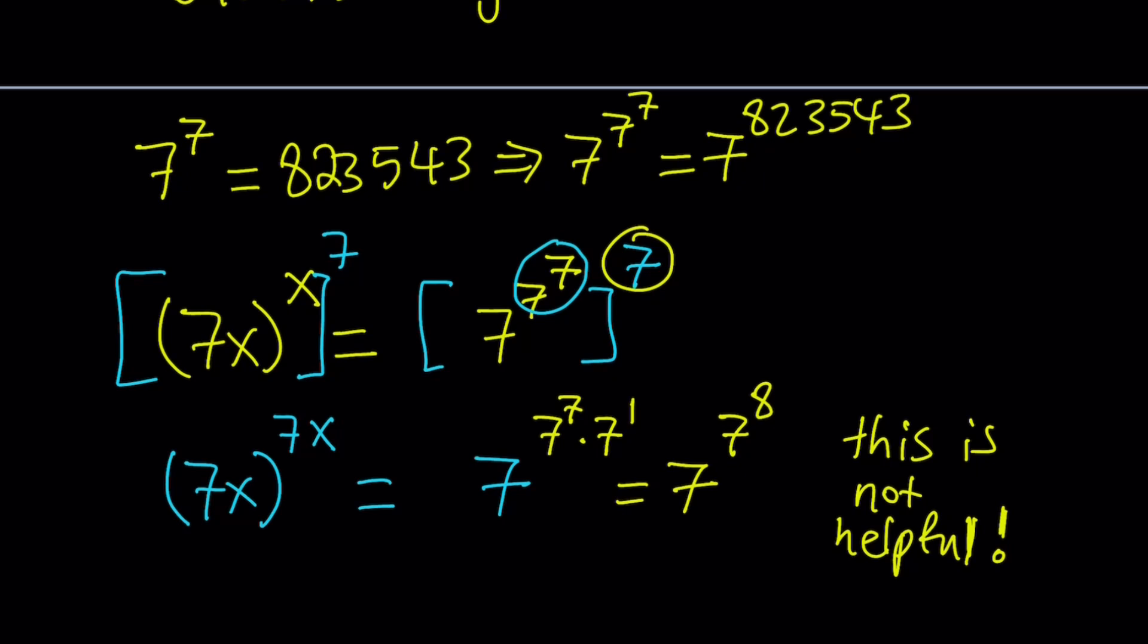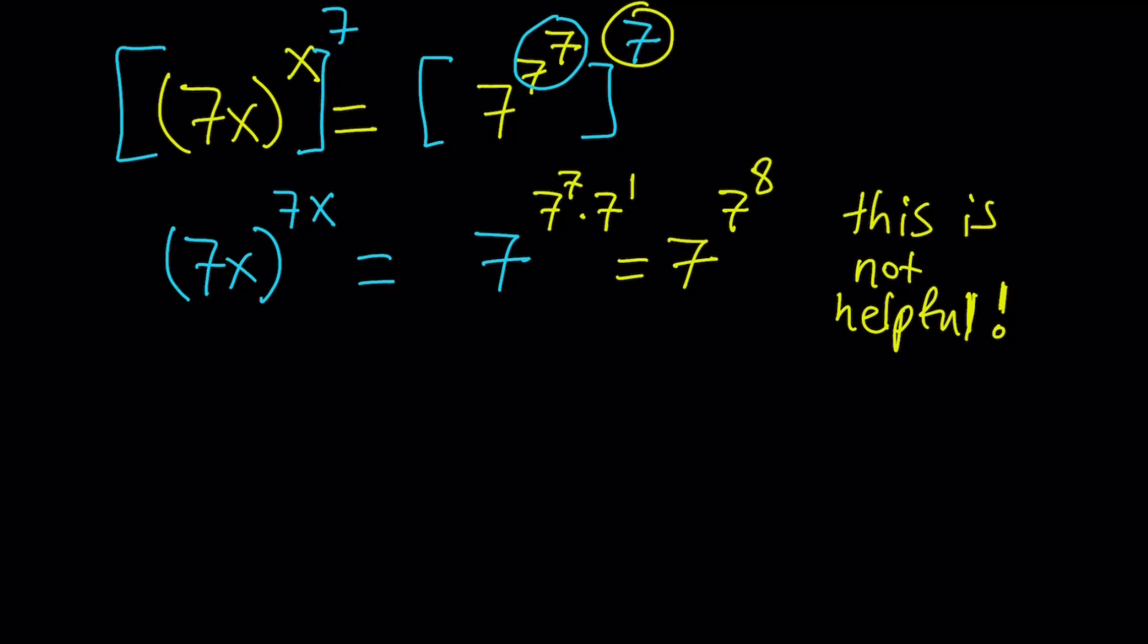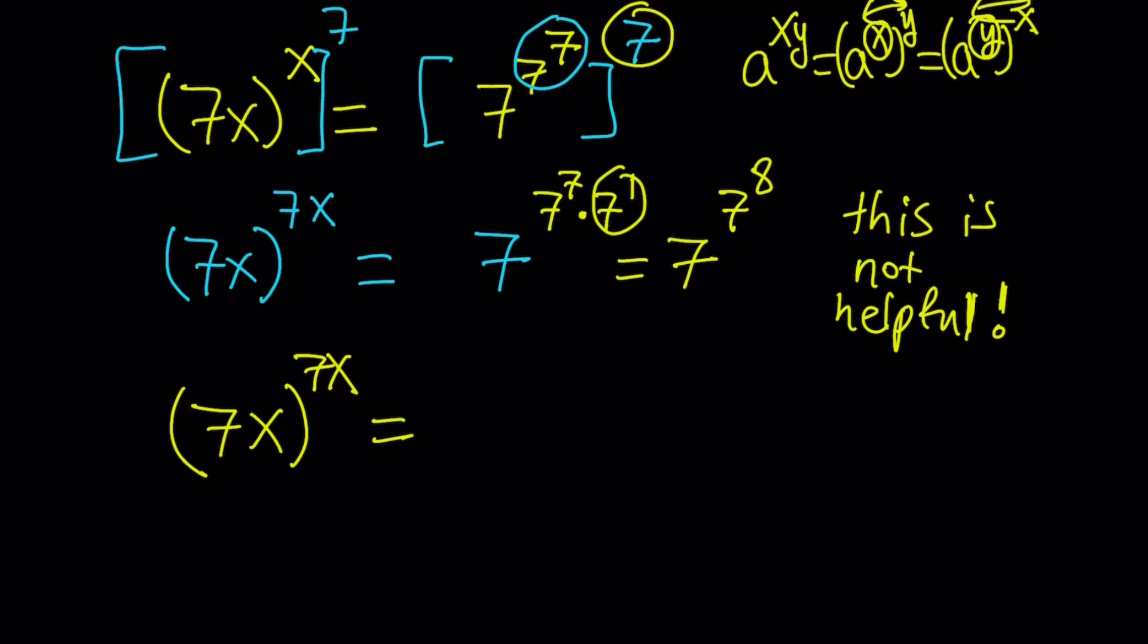So we've got to do something better than this. Because look at the left-hand side. I've got something like y to the y, but I don't have a to the a on the right-hand side. So how can I go from this to something that looks like a to the a? So here's what we're going to do. We're actually going to take the 7 inside the parentheses. Instead of multiplying and combining by this, we're going to put it inside. Because remember the rule, a to the power xy is a to the power x to the power y, or a to the power y to the power x. So if you see that two exponents are being multiplied, then you can put any of them inside the parentheses.